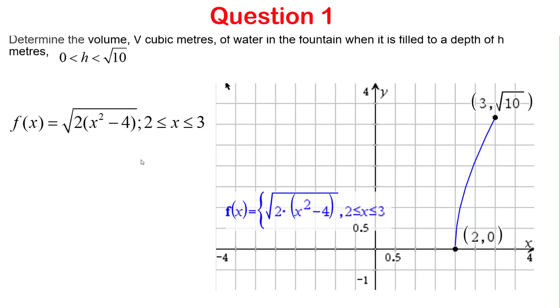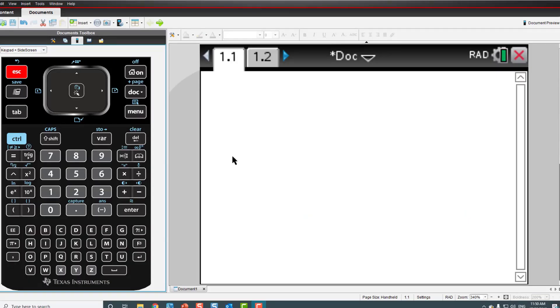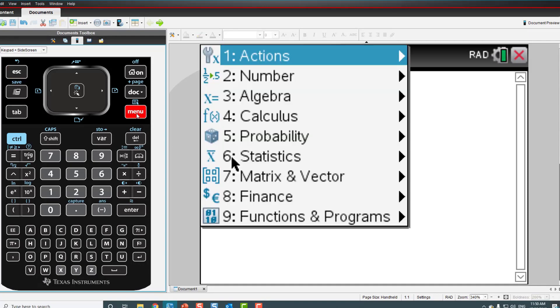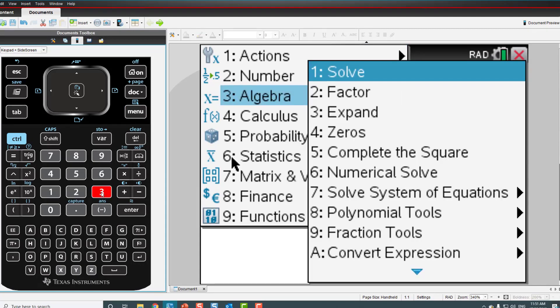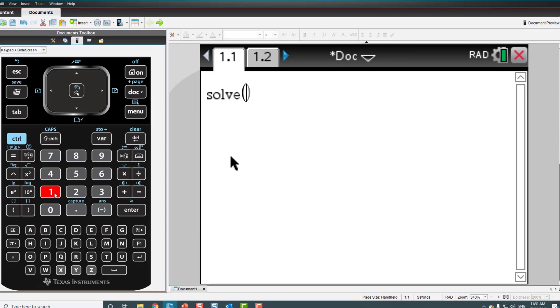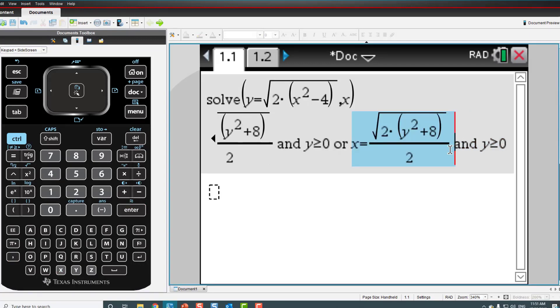Since we are rotating the curve about the y-axis, we need to write this in terms of y and make x the subject. So let's rearrange the equation. We'll go to menu and use the solve option, which is number 1. We're going to write y equals, under the root sign we have 2 which is common, then x squared minus 4, and solve this for x. That gives me two answers and I'm going to copy this to use later.